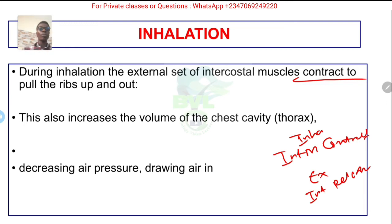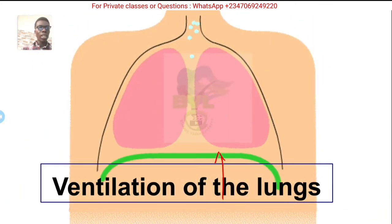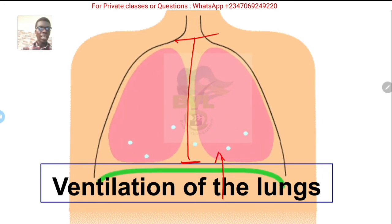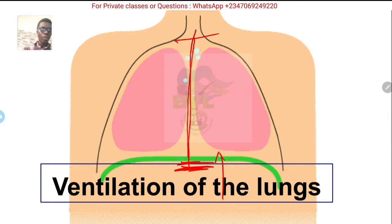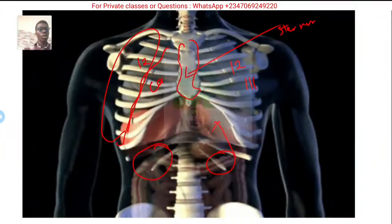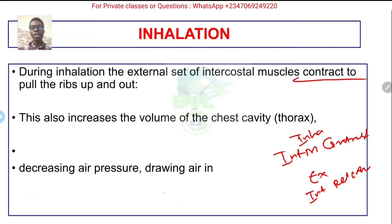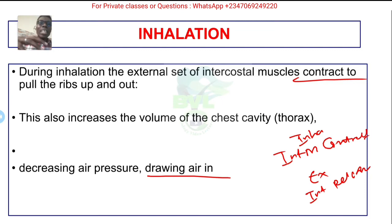The volume of the thorax or chest increases during inhalation — you can see the volume was smaller and it increases. So the volume of the chest increases when you inhale. This means there is a decrease in air pressure in that region, because an increase in volume means a decrease in pressure. So the pressure has reduced, giving the lungs space to expand.